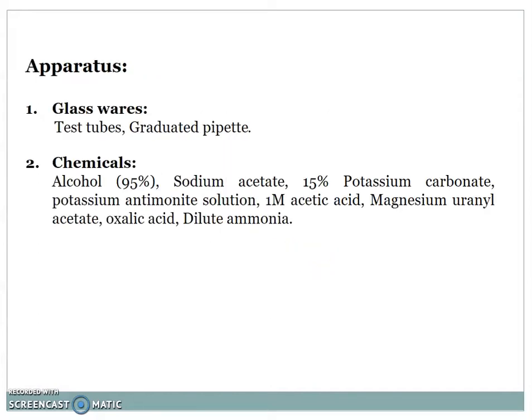Let's start with apparatus. Glassware required: test tubes and graduated pipette. Chemicals: Alcohol 95%, sodium acetate 15%, potassium carbonate, potassium antimony solution, 1 molar acetic acid, magnesium uranyl acetate, oxalic acid, and dilute ammonia.